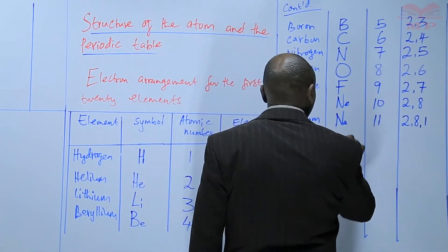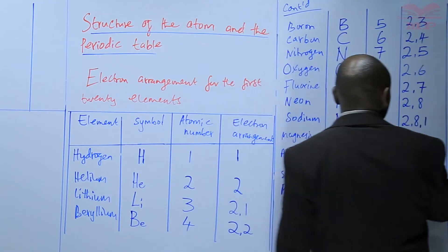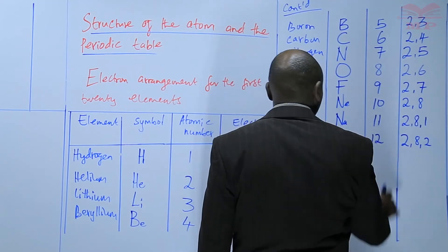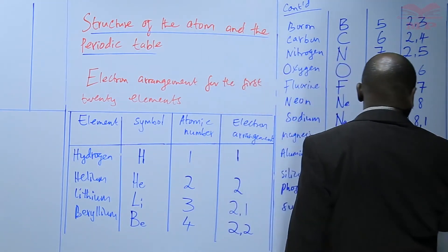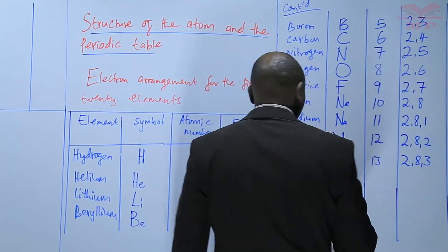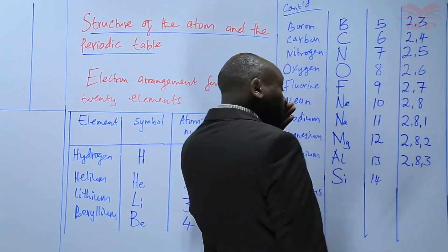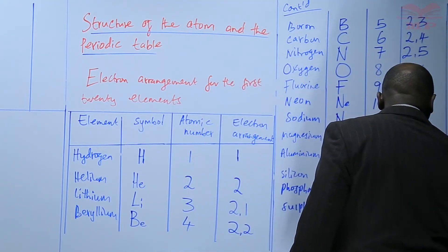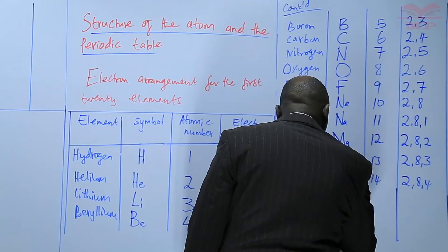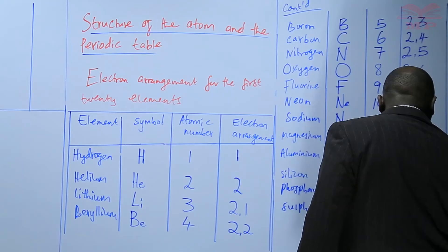Magnesium - atomic number 12, therefore 12 electrons. Arrangement: 2, 8, 2. Then aluminum - Al, atomic number 13, arrangement is 2, 8, 3. Total 13. Silicon is Si, 14 is the atomic number, so 14 electrons giving arrangement 2, 8, 4. Phosphorus is P, capital. Atomic number 15, arrangement of electrons: 2, 8, 5.